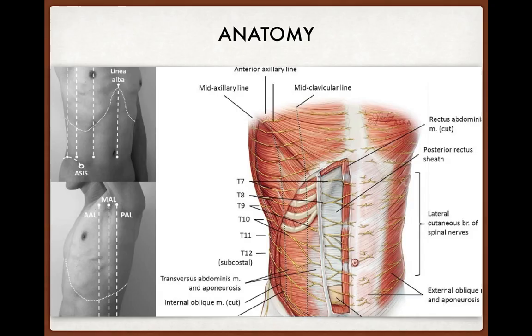Looking at the anatomy, the lateral abdominal wall is composed of mainly three layers of muscle: external oblique, internal oblique, and transverse abdominal muscle. The nerve supply of the abdomen comes from T6 to T12 and L1. These nerves travel in the intercostal space, then come out into the abdominal musculature and travel in the plane between the internal oblique muscle and transverse abdominal muscle — this plane is known as the TAP plane.